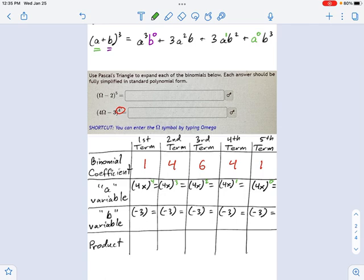Okay, well, 4 to the 4th, I don't have off the top of my head. What is that? 256. Great. That's 256x to the 4th. 4 cubed. That's not so bad, but it's still kind of big. Let's see, what is that? That's 64. 64x cubed.